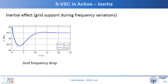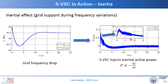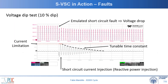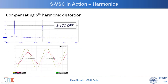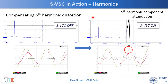Now let's see the SVSC in action. First, the inertial effect: we applied a frequency drop with a grid emulator, and the SVSC injects active power to support the grid frequency. Then, we emulated voltage dips — for example, this 10% voltage dip, as you can see from the positive voltage envelopes. The SVSC injects short-circuit currents with a decaying time constant, which depends on the parameters of the excitation control. Of course, the current has to be limited to comply with the inverter ratings, which are very different from the overload capabilities of synchronous machines. Finally, we prove the harmonic compensation capabilities by injecting a fifth harmonic distortion. As soon as the SVSC is turned on, this distortion is compensated and the voltage shape improves a lot.